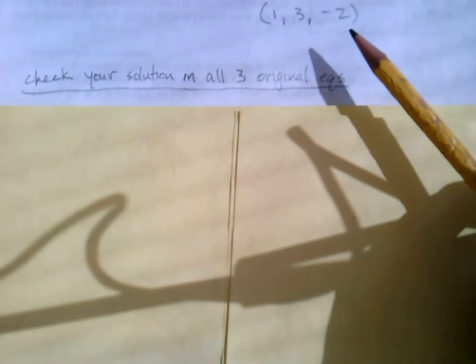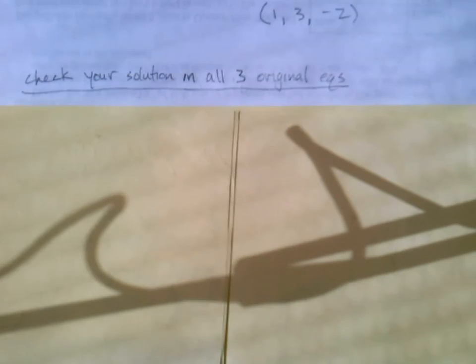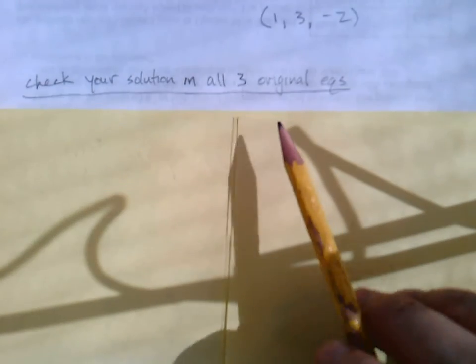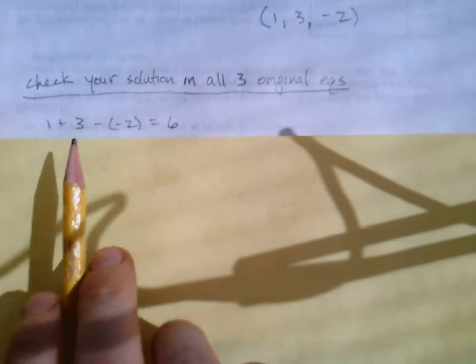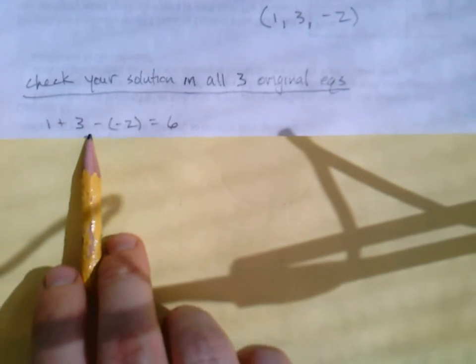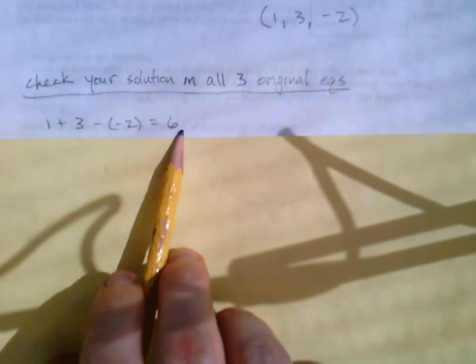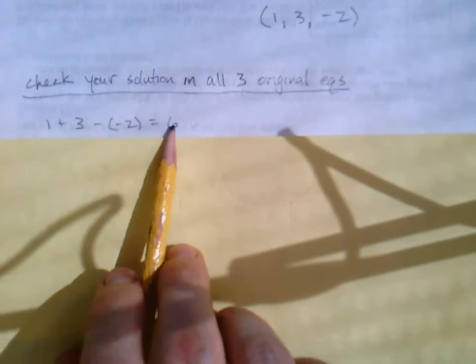So we're going to take our solution, what we're pretty sure is our solution, 1, 3, negative 2. We're going to plug that value of x, y, and z into all three original equations. Remember, a solution are the values of x, y, and z that make all of your equations true. So here, that would mean plug x, y, and z back into that first equation. x plus y minus z was supposed to equal 6. So I'll put in x, y, and I'll subtract, right? Subtract z, so subtract negative 2. Is that really true? 1 plus 3 minus negative 2? Well, yeah, because that's 1 plus 3 plus 2. That would give us 6.